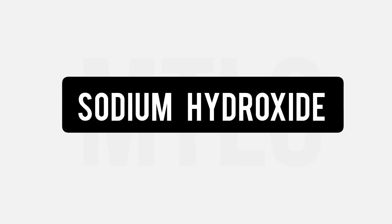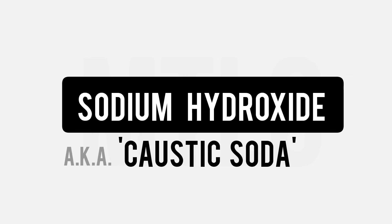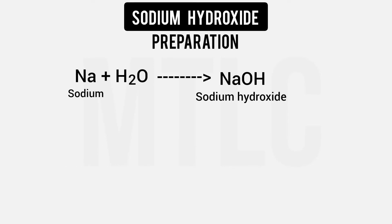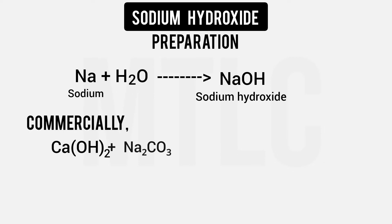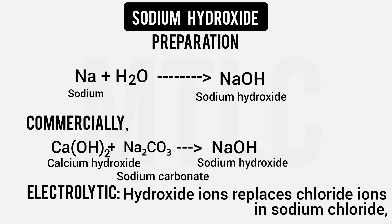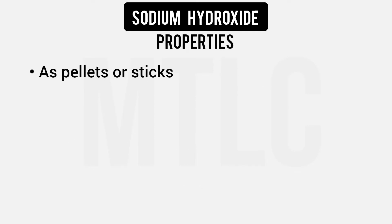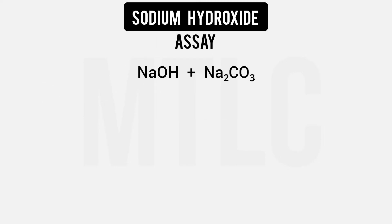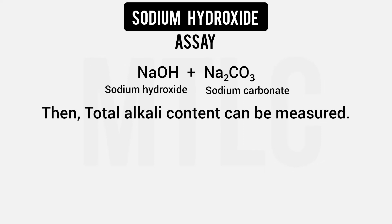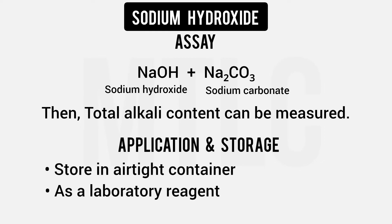Next is sodium hydroxide, also called caustic soda. It is prepared by adding sodium with water to get sodium hydroxide. In the industrial method, sodium carbonate is used via the electrolytic method. Sodium hydroxide comes in pellet or stick form. It is used in soap preparation and for total alkaline measurement.